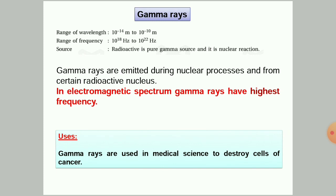The last wave type is gamma rays, with a wavelength range of 10⁻¹⁴ meters to 10⁻¹⁰ meters and a frequency range from 10¹⁸ Hertz to 10²² Hertz. Gamma rays are emitted during nuclear processes and from certain radioactive nuclei. In the electromagnetic spectrum, gamma rays have the highest frequency. They are used in medical science to destroy cancer cells.